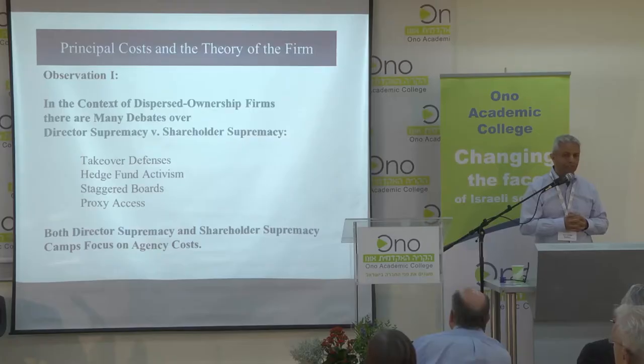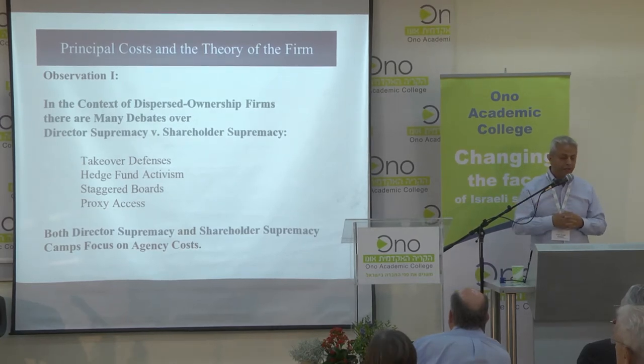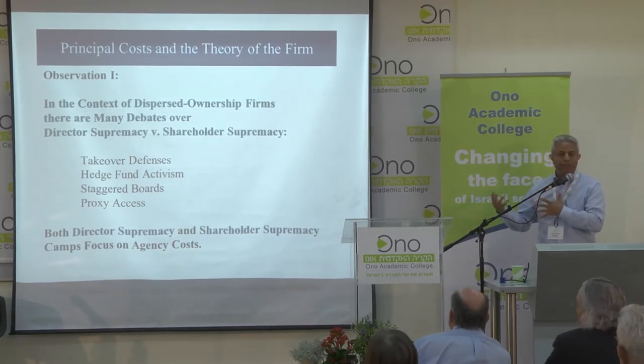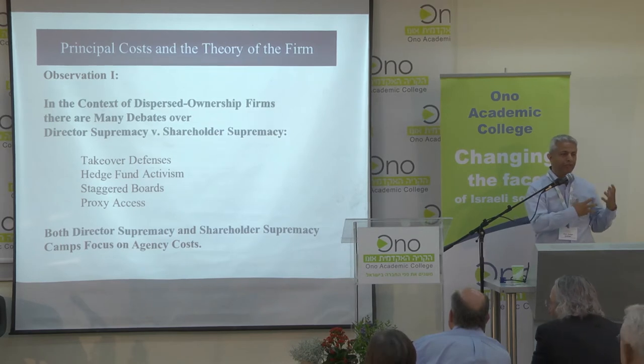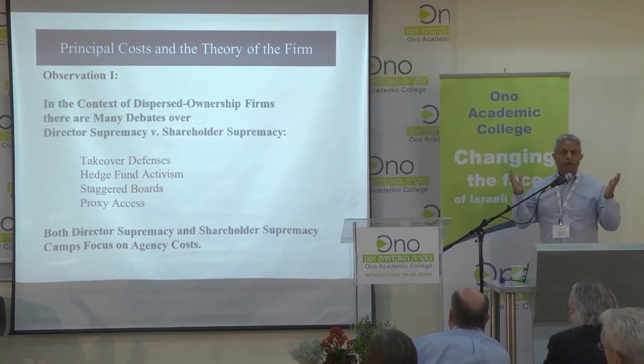This project starts from the observation that when you think about dispersed ownership — corporations that do not have a controlling owner — there are many debates in the United States. The two camps are divided into what they call director supremacy and shareholder supremacy: those who would like to give more power to the shareholders and those who would like to give more power to the board of directors.